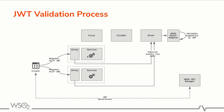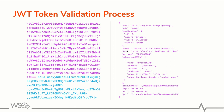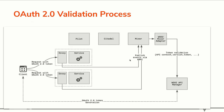Let's look at the JWT validation process. When the request comes to the backend service, first it will hit the Envoy proxy, from there it will call the mixer to check the policy. From there it will call the WSO2 mixer adapter. The mixer adapter will validate the JWT — if it is successful, the request will go to the backend service. In the JWT token validation, the token contains the scope and other information like subscribed APIs, so subscription validation and scope validation will happen.